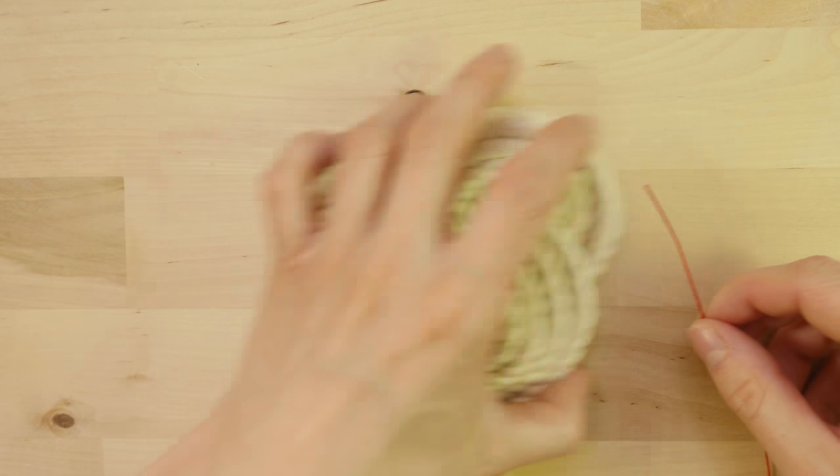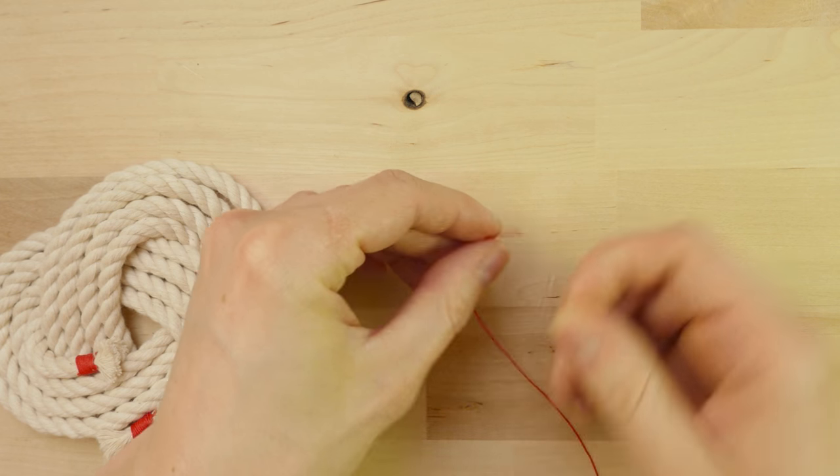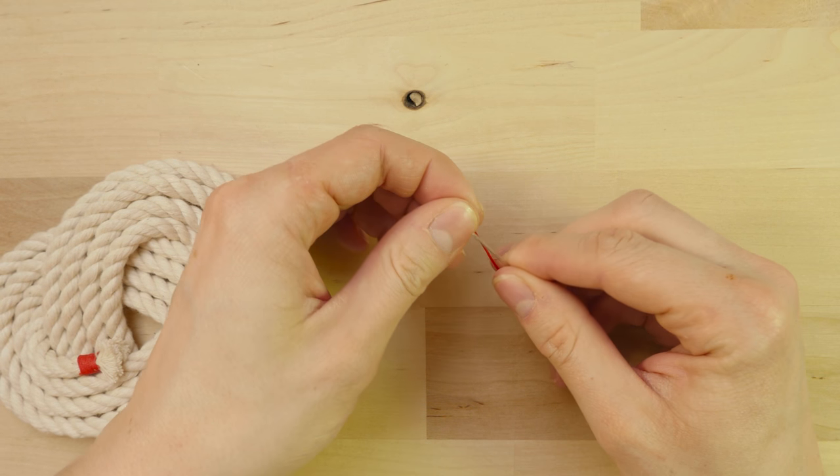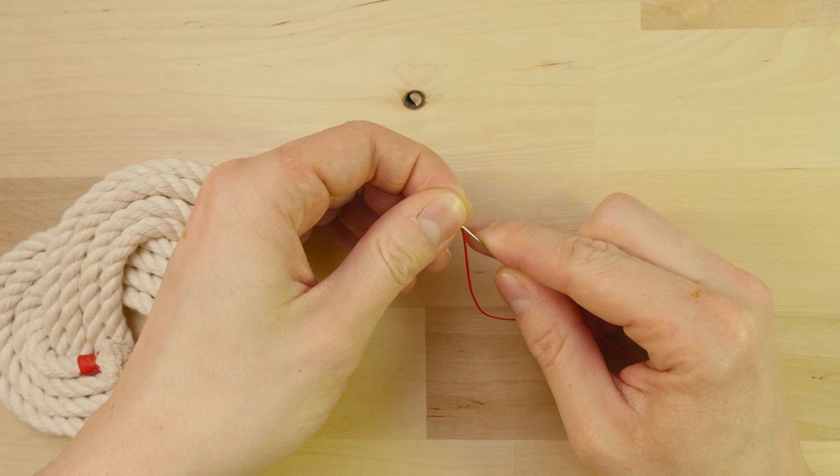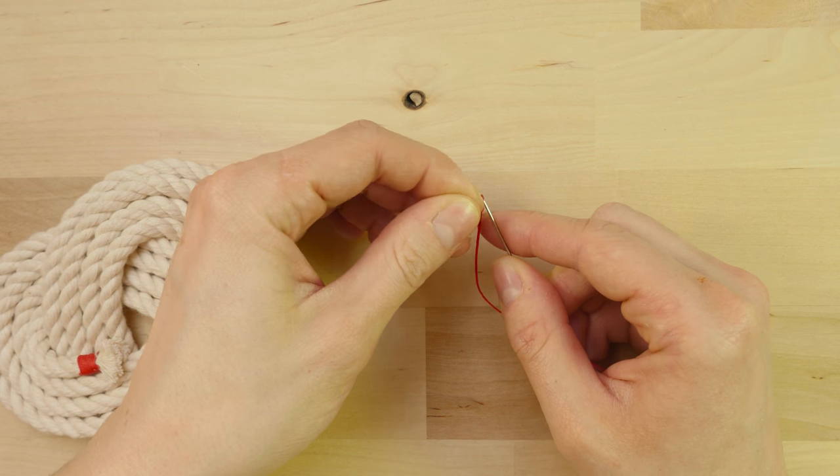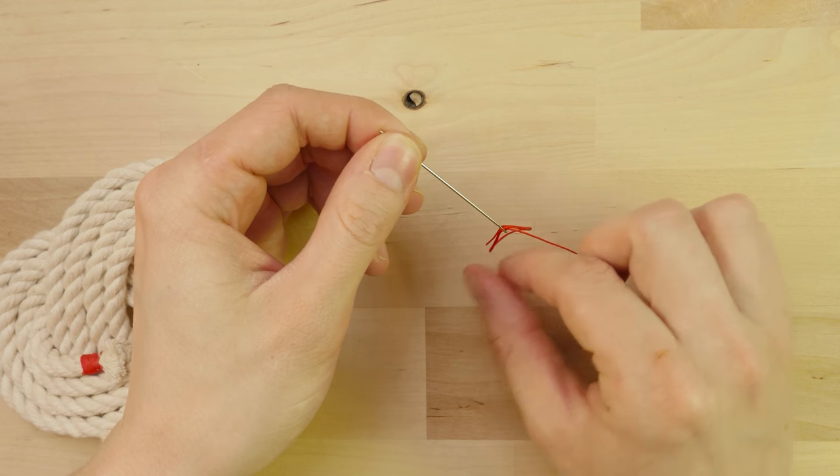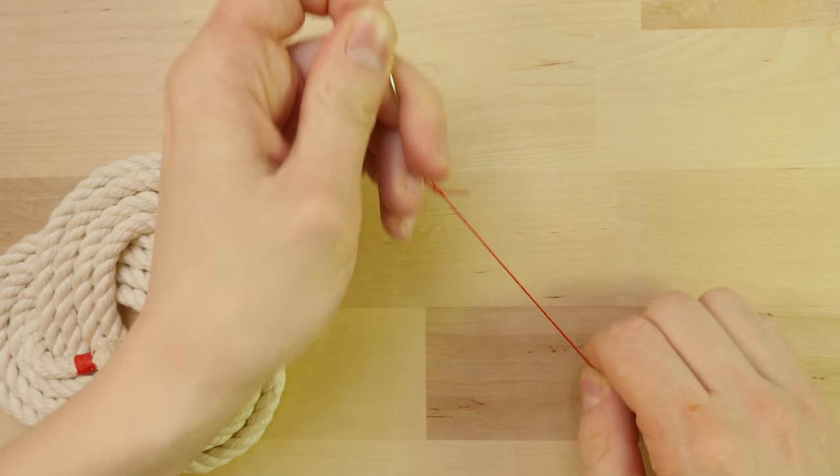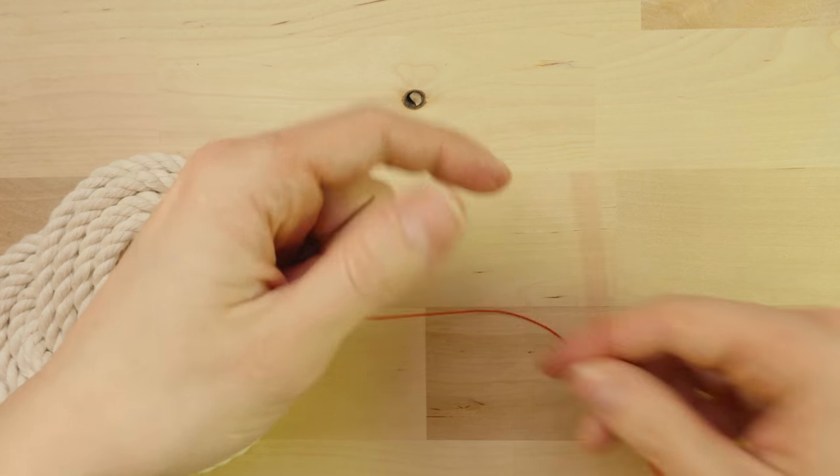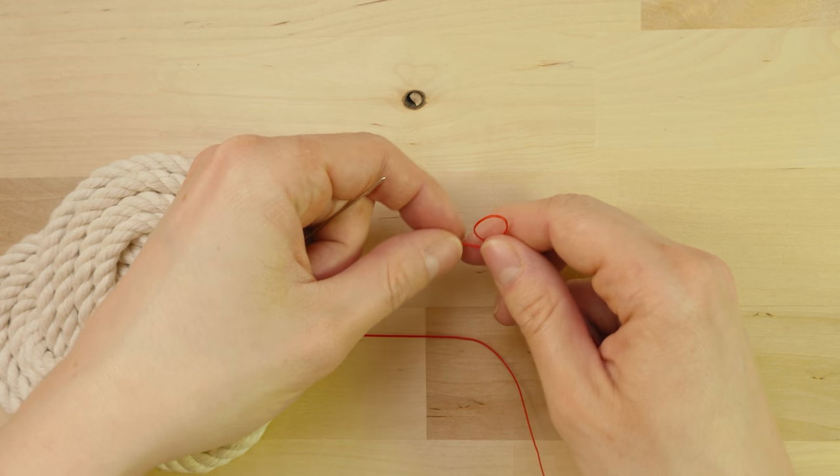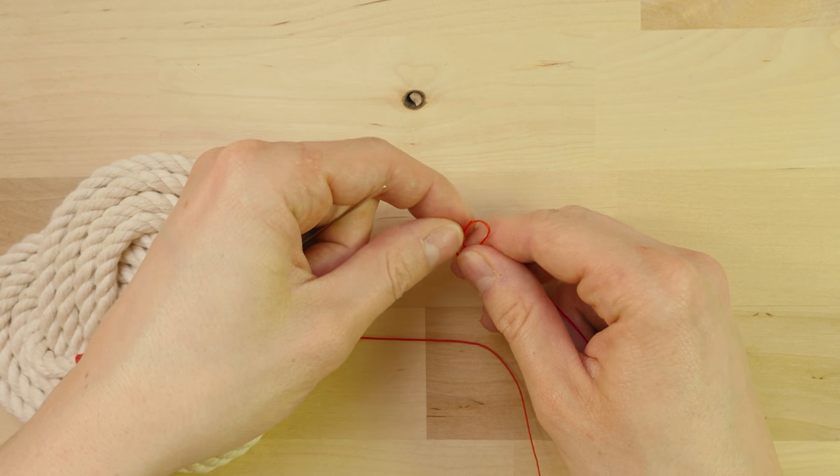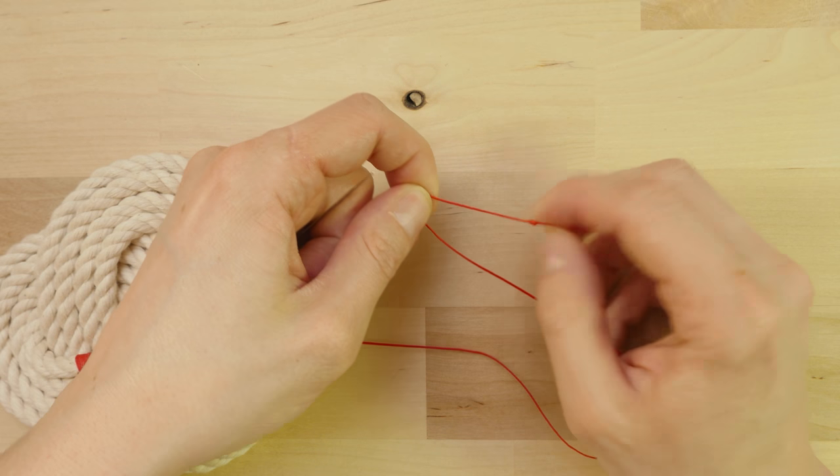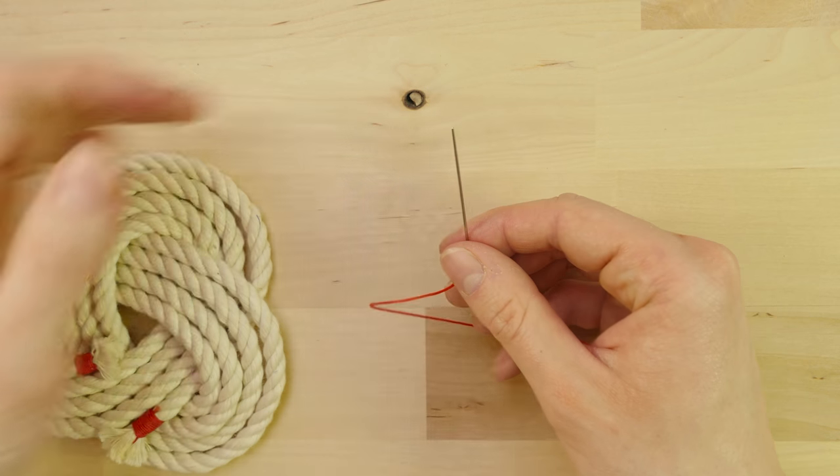To start, take some thread, a needle and thread your needle. Make a small overhand knot on the other side of your thread. And then we can begin stitching.